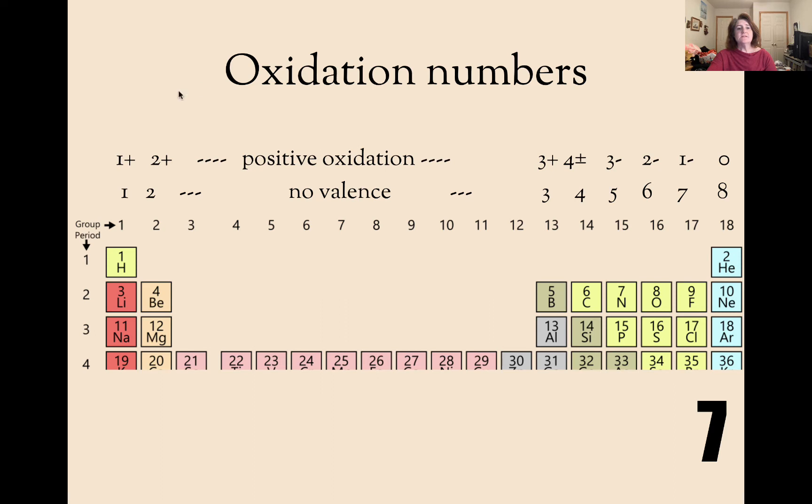The oxidation of group 1 is 1 positive. Group 2 is 2 positive. Groups 3 through 12 have a positive oxidation. Group 13 is 3 positive. 14 is 4 plus or minus. 15 is 3 negative. 16 is 2 negative. 17 is 1 negative. And 18 is 0.